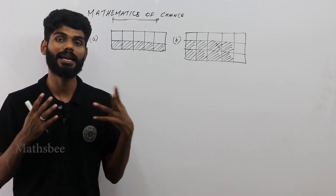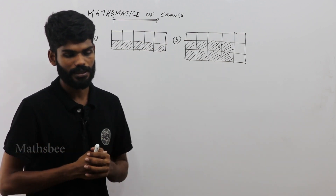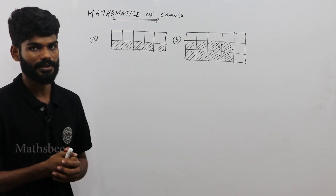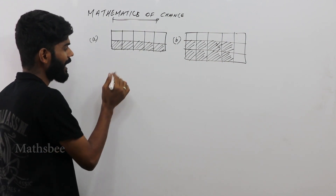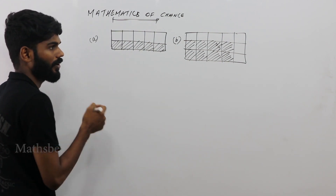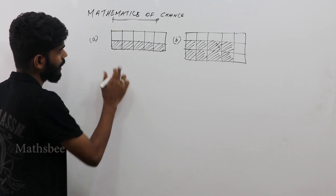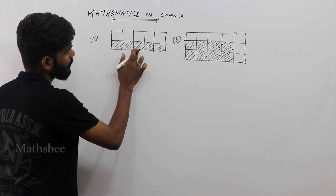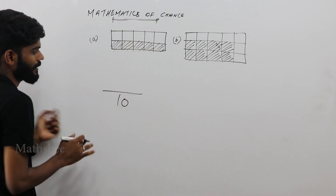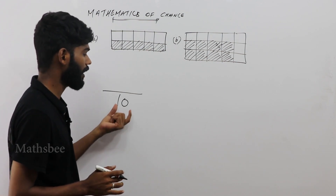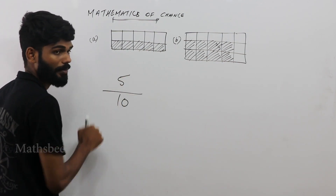Now a new question about shaded region. Whatever rectangle is given, the shaded region is the favorable outcome. The total number is 10 — one, two, three, four, five, six, seven, eight, nine, ten. The shaded region count is 5. So the probability of the shaded region is 5 by 10.